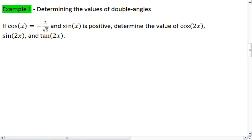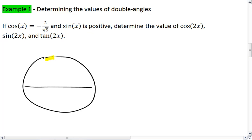This first example, we're going to determine the value of double angles. We're told that cosine of x equals negative 2 over root 5. And we're also told that sine is positive. Well, first, just to make sure we have a good understanding of this, cosine is negative puts us in our left side of our circle. And a positive sine puts us in the upper half. That means we are firmly located in quadrant 2.